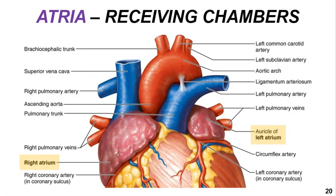Returning to the chambers of the heart, we'll begin with the atria. The atria are the receiving chambers of the heart because they receive blood from the major veins. Recall that veins are always returning blood to the heart. The atria are also smaller than the ventricles because they don't have to push blood as far as the ventricles do. The auricles are small wrinkled appendages found on the inferior part of each atrium, and they function to increase the atrial volume a little bit.